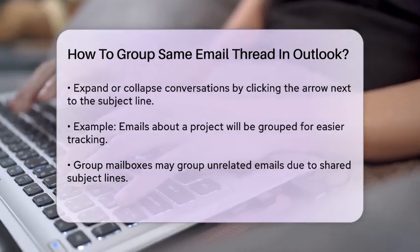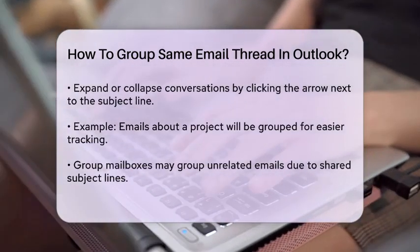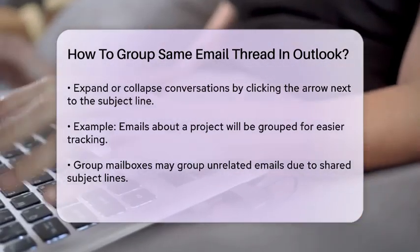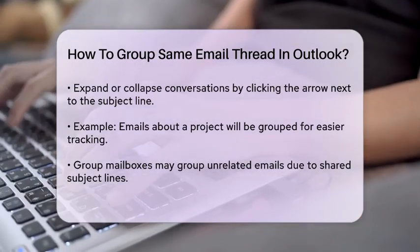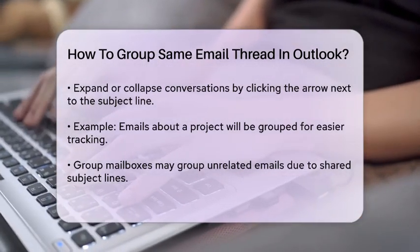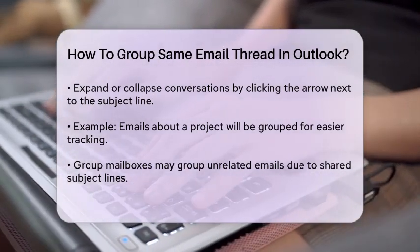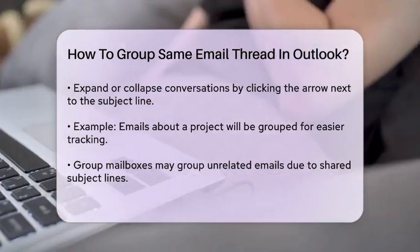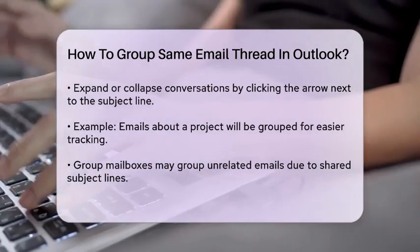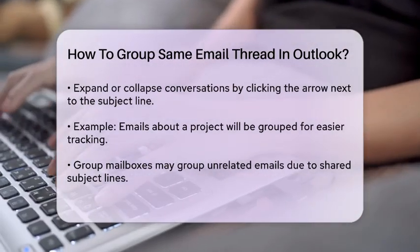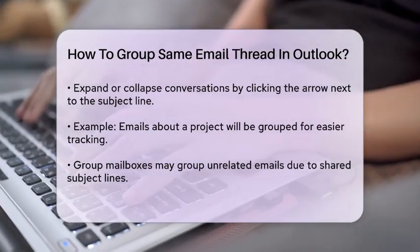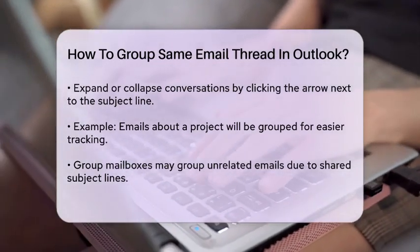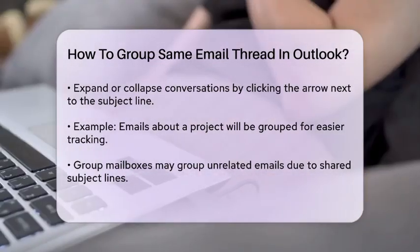If you have emails in a group mailbox, they might get grouped together even if they're not directly related, just because they have the same subject line. However, in your personal mailbox, emails are usually grouped more accurately based on the actual conversation thread.